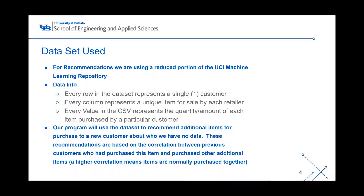Basically our program is gonna use the dataset to recommend additional items for when we get a new customer who's looking at something in our list. It doesn't matter what item — it's gonna return something specific to that item. These recommendations are gonna be based on the correlation between previous customers who have purchased this item and other additional items at a higher correlation, meaning purchased together, giving customers what we think they would like based on their current choice.